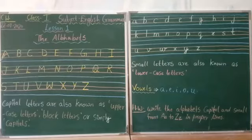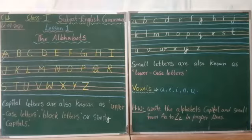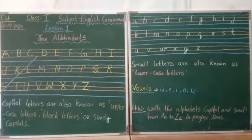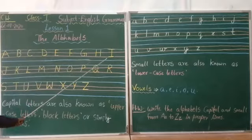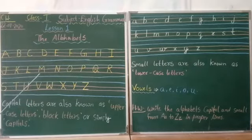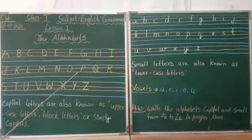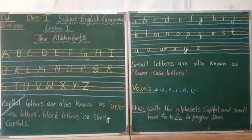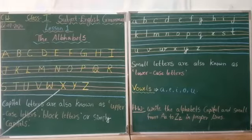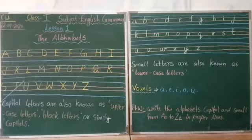These are called alphabets. Now we will read it. A, B, C, D, E, F, G, H, I, J, K, L, M, N, O, P, Q, R, S, T, U, V, W, X, Y, Z. These are called alphabet and these are called capital letter alphabets.